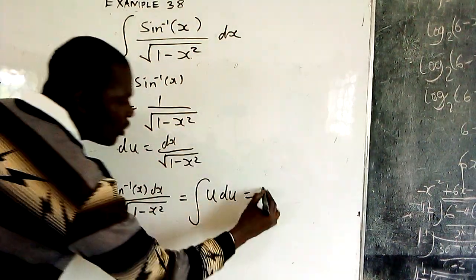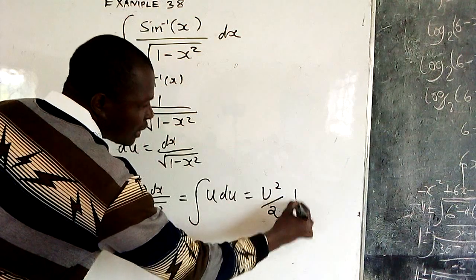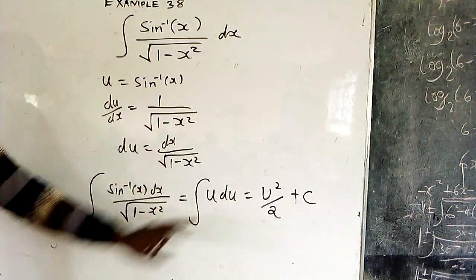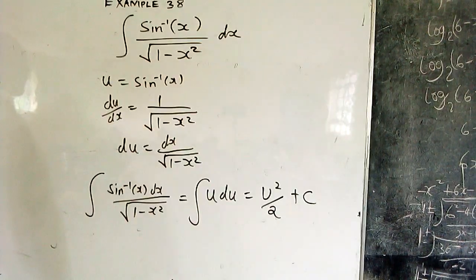If you integrate u, that is u²/2 plus C. You simply add 1 to the power, you divide by the new power, isn't it?